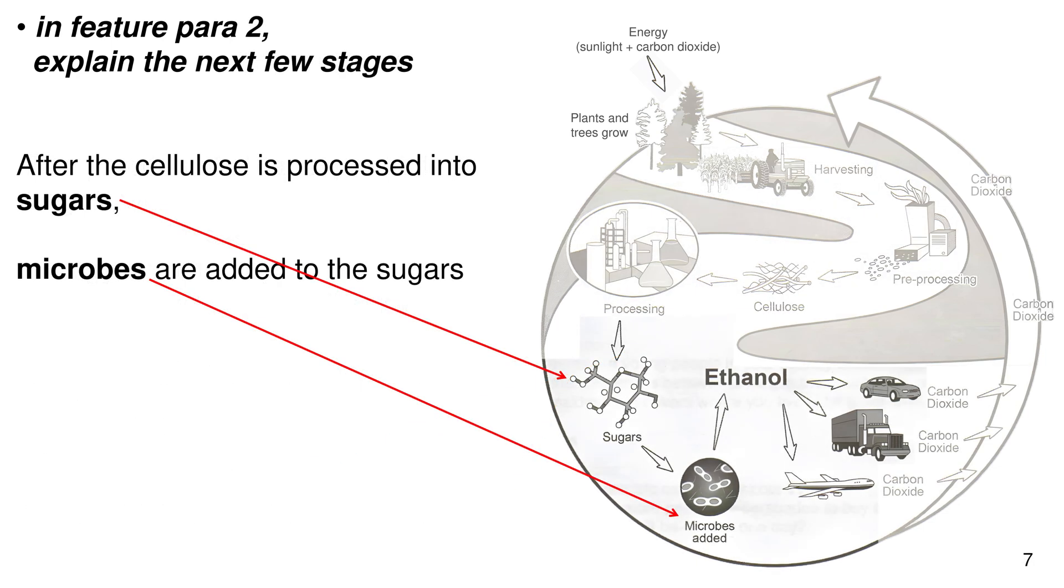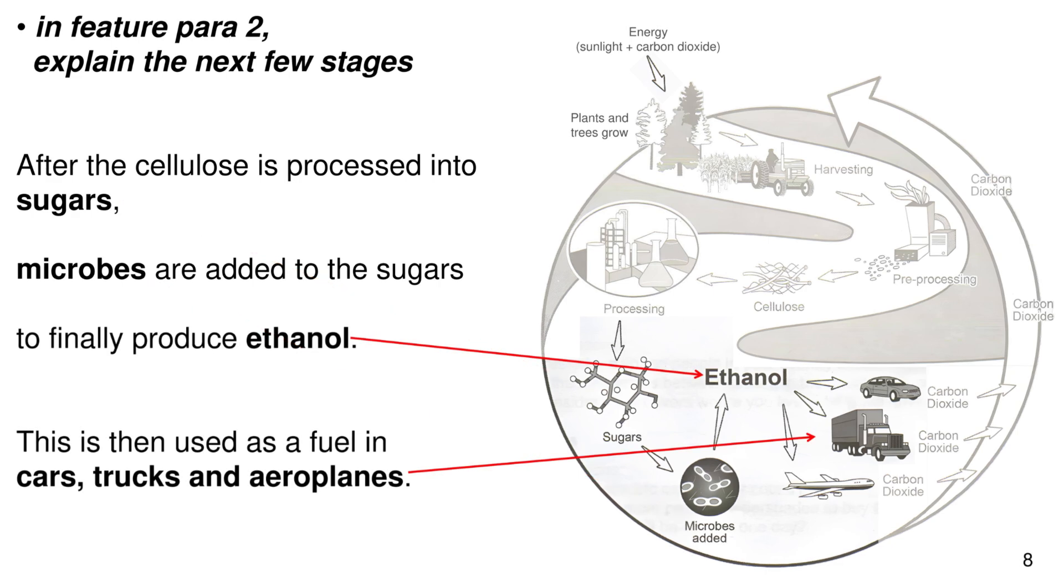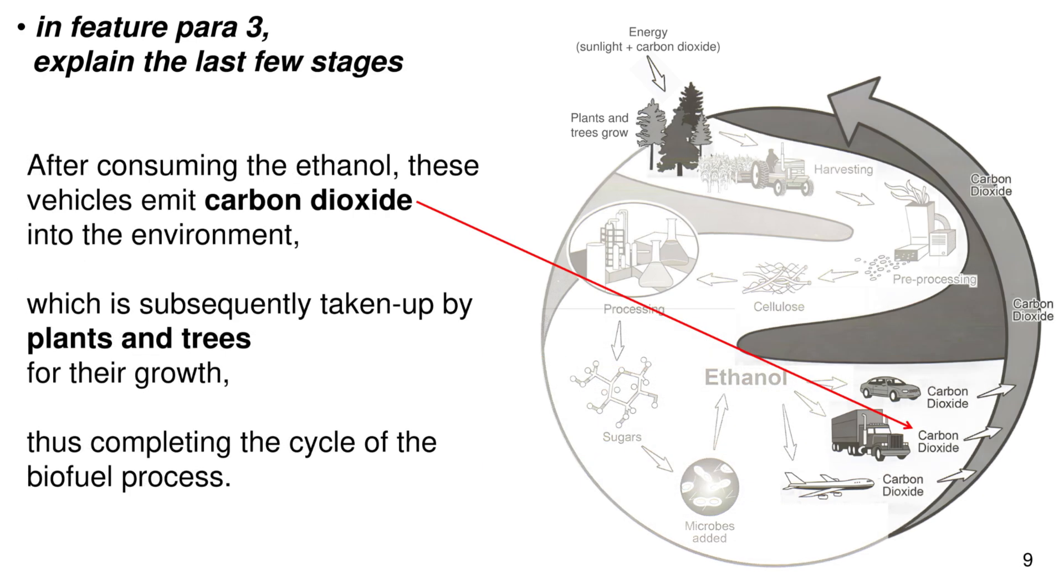In feature paragraph 2, explain the next few stages. After cellulose is processed into sugars, microbes are added to finally produce ethanol. This is then used as a fuel in cars, trucks, and airplanes.